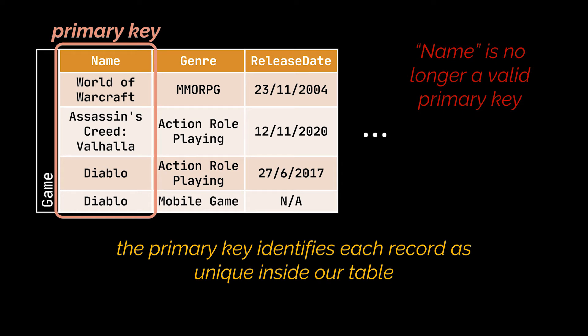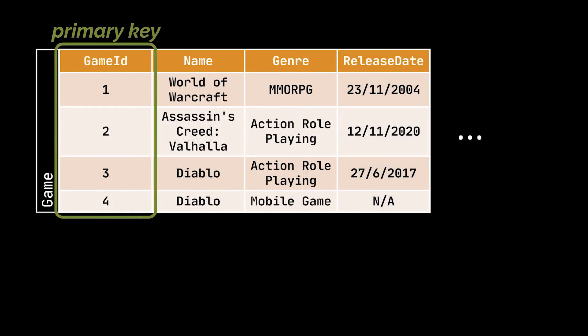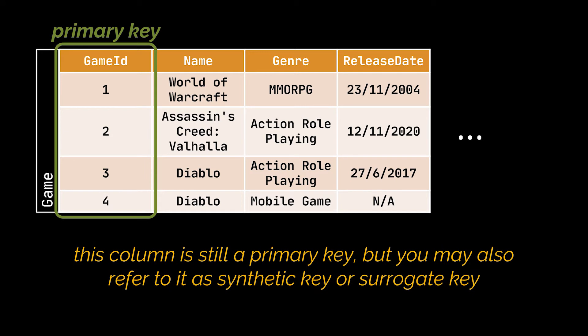But what if we do encounter two different games stored under the same name or title? In such scenarios, your DBMS will offer you the option to add an additional column to your table — in our case, a game ID column. This column will be used to ensure uniqueness among our records.